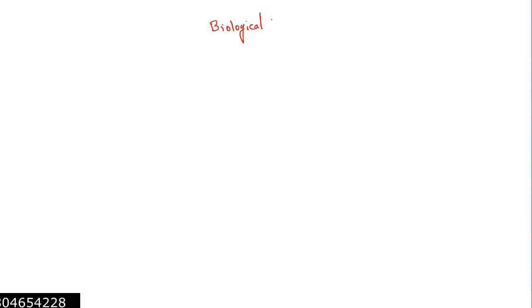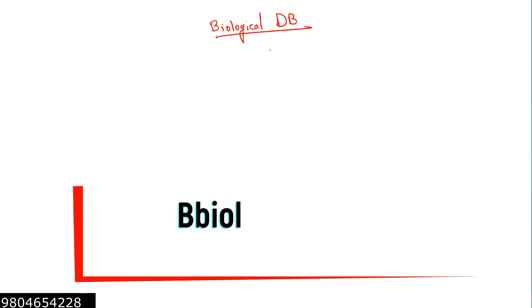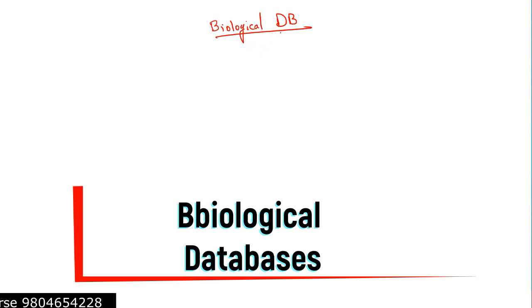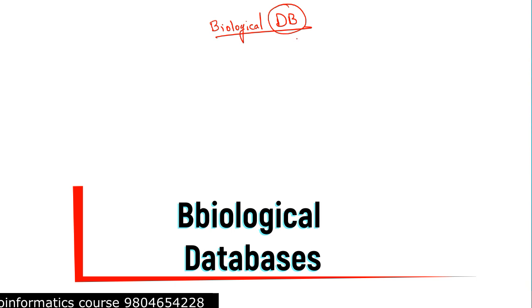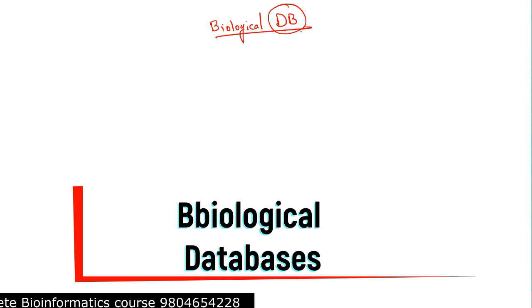Now it's time to discuss more about biological databases. Databases, short form DB, are like electronic drawer or cabinet systems where we can organize and store our data, and we can retrieve that data whenever we need it.